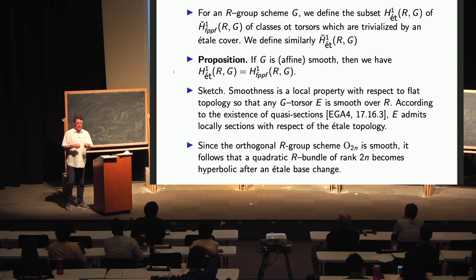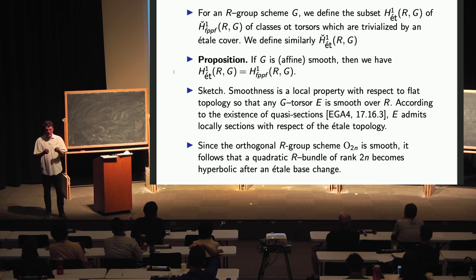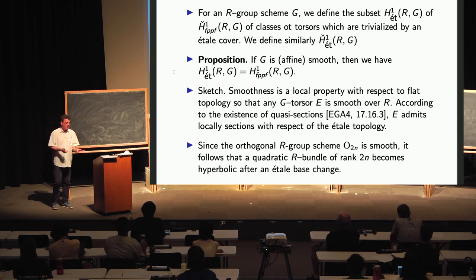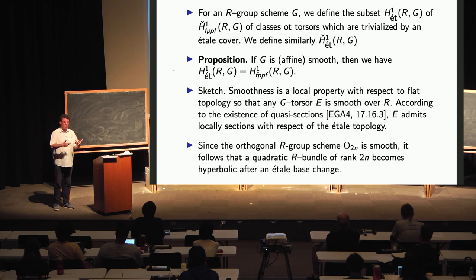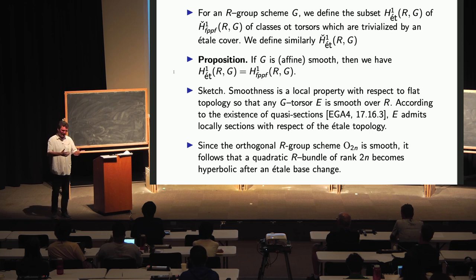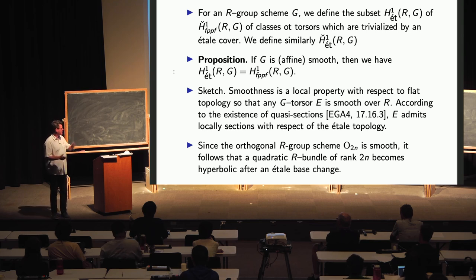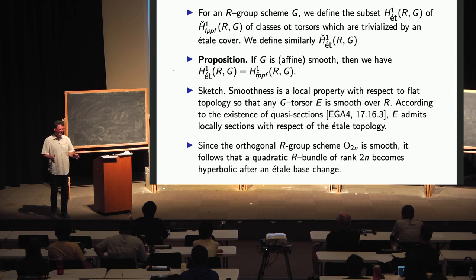It follows that O(2N)-torsors are locally trivial with respect to the étale topology. We saw yesterday that an O(2N)-torsor is nothing but a quadratic bundle of rank 2N. In conclusion, a quadratic bundle of rank 2N always becomes hyperbolic after some étale base change. The general cohomological framework essentially handles this, whereas using quadratic forms in the étale setting directly requires more cleverness.